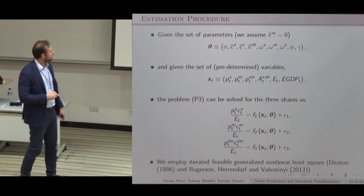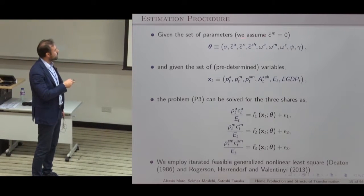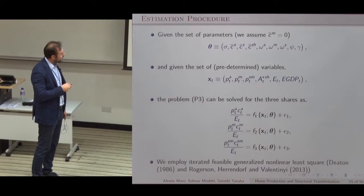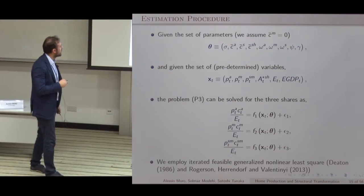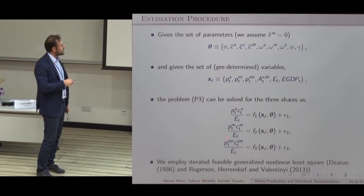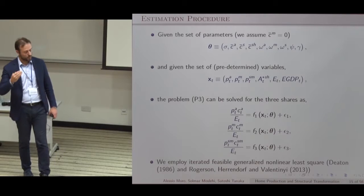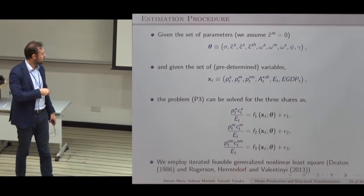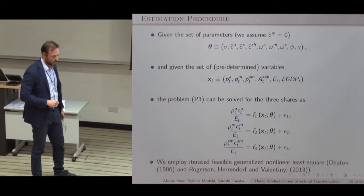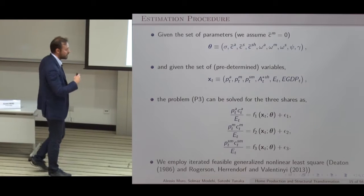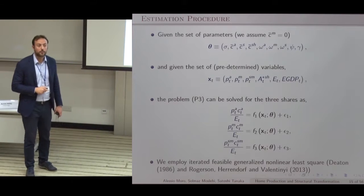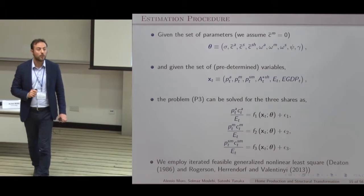Given the preference parameters we want to estimate and the data we use, we solve for the three shares and apply the iterated feasible generalized nonlinear least squares method — the same methodology used by Herendorf and others.